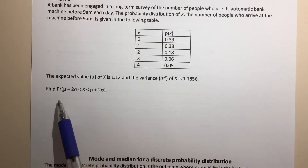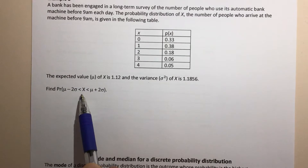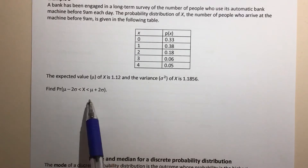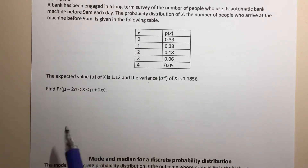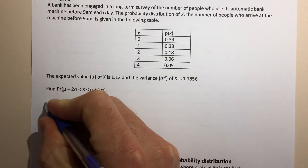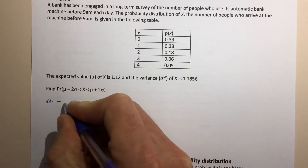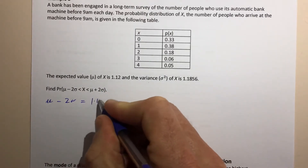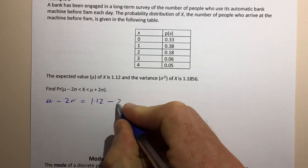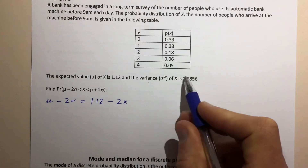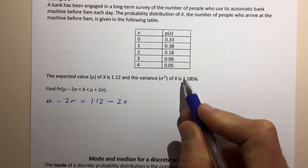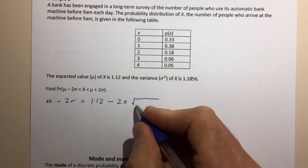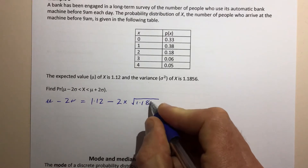The question says: find the probability that X is greater than the mean minus two standard deviations, but less than the mean plus two standard deviations. First, let's work out the mean minus two standard deviations, which equals 1.12 minus two times the standard deviation. Remember that the standard deviation is the square root of the variance, so we're doing 1.12 minus two times the square root of 1.1856.